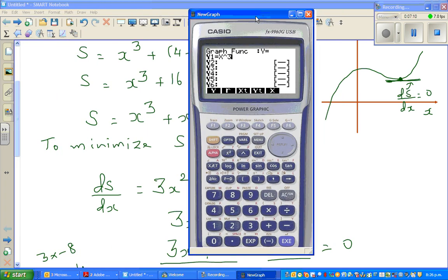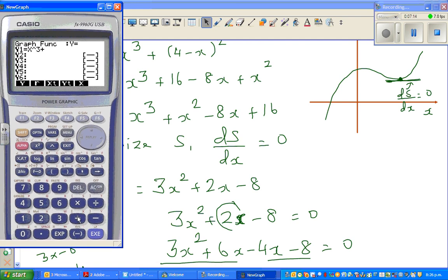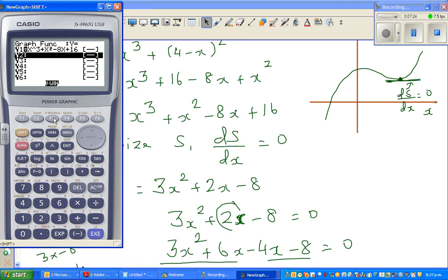What's the equation? x cubed plus x squared minus 8x plus 16. Now I'll have to adjust the scale. So you go to shift V window.